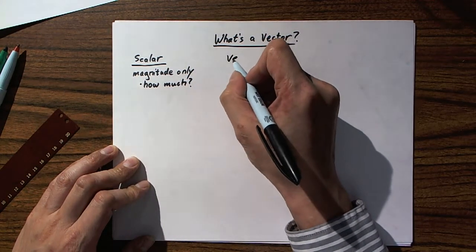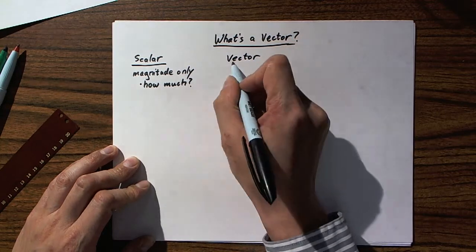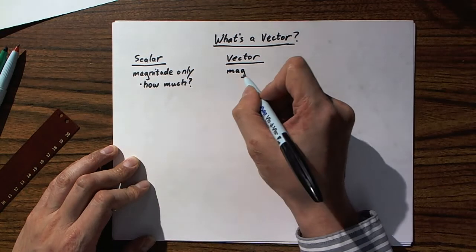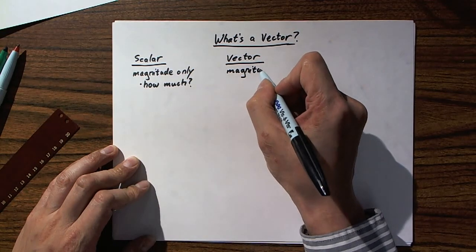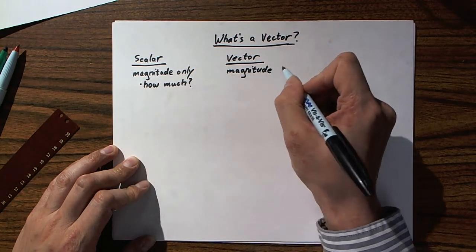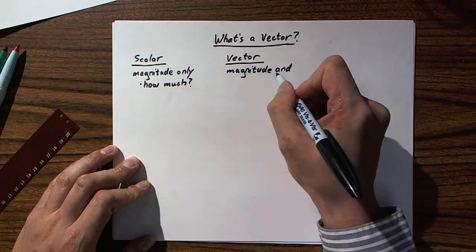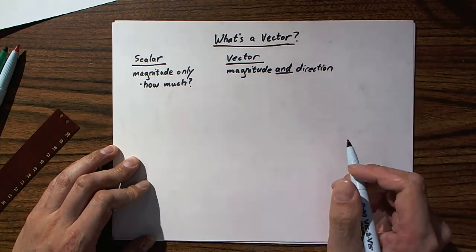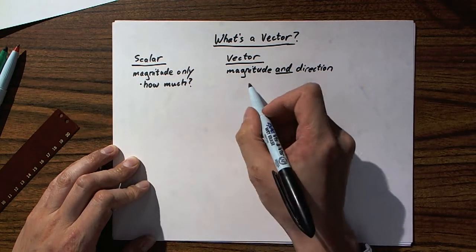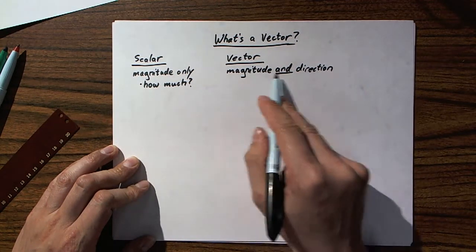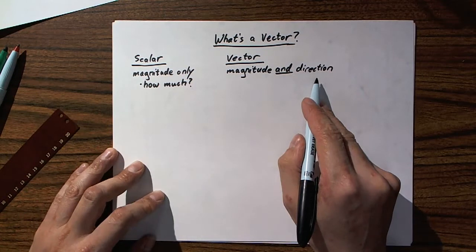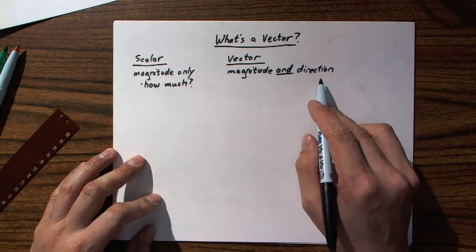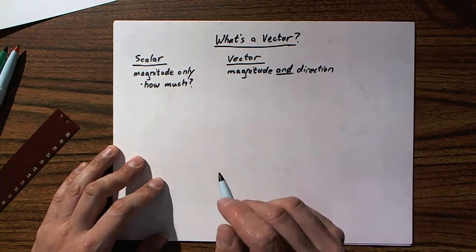In other words, the only factor that's involved in a scalar measurement is answering the question, how much? How much of this particular quantity do you have? Now, contrast this with a vector. As anybody who's seen Despicable Me knows, vectors have both magnitude and direction.